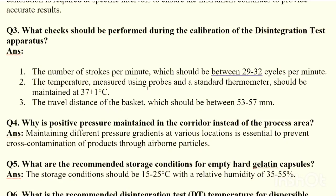The number of strokes per minute should be between 29 to 32 cycles per minute for DT calibration. Temperature is measured using probes and a standard thermometer, and should be maintained at 37 ± 1°C. The travel distance of the basket should be between 53 to 57 mm. These are the key checks during DT calibration.